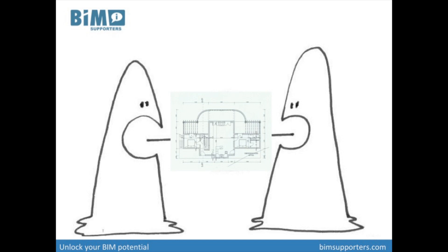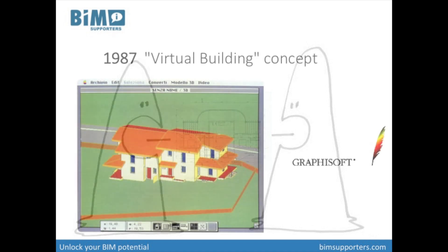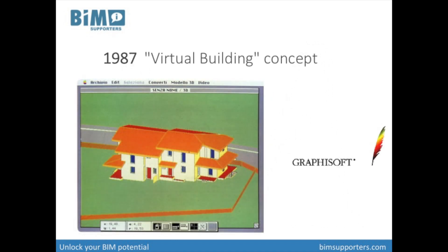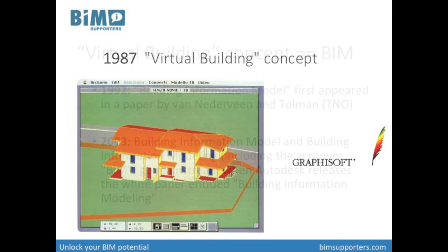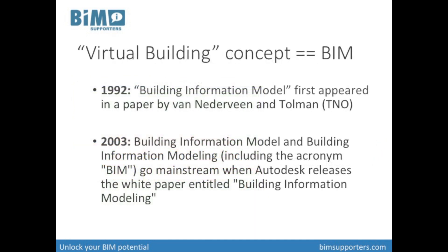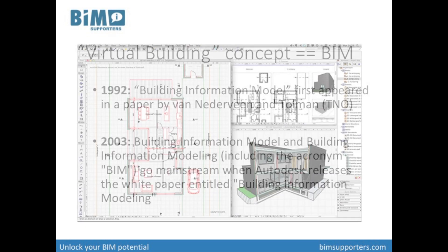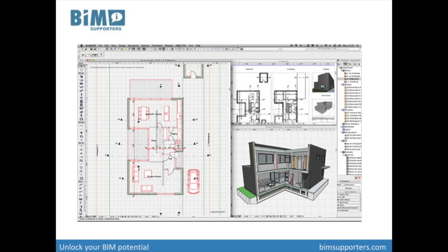Use of a computer to make drawings was efficient, but computers can do so much more. In 1987, Graphisoft introduced the virtual building concept with the release of Archicad. The virtual building concept is basically the first practical implementation of what we call BIM today. More on that in a separate course about the history of BIM. Archicad was not a software tool where a user created drawings.